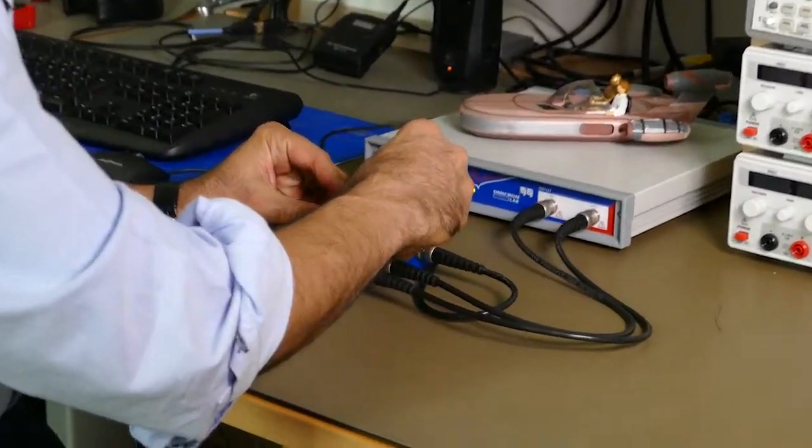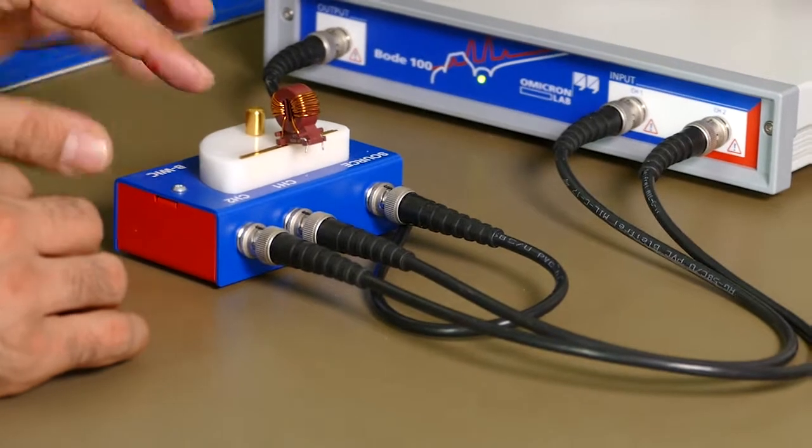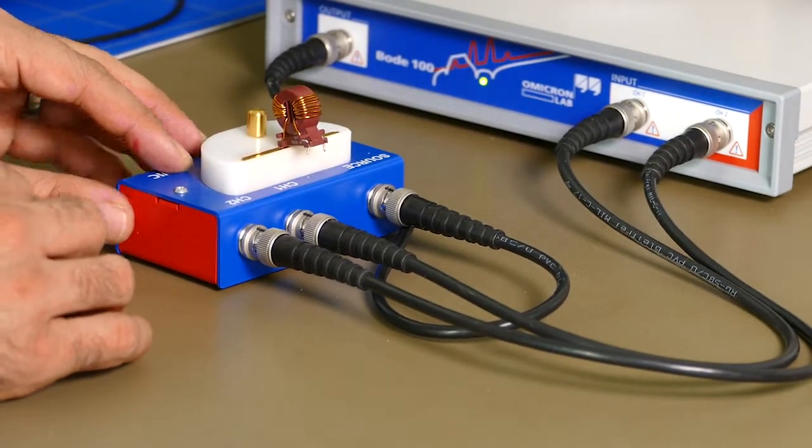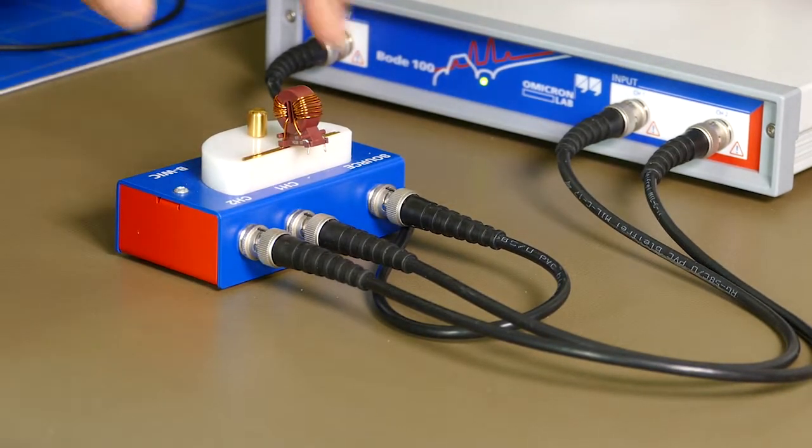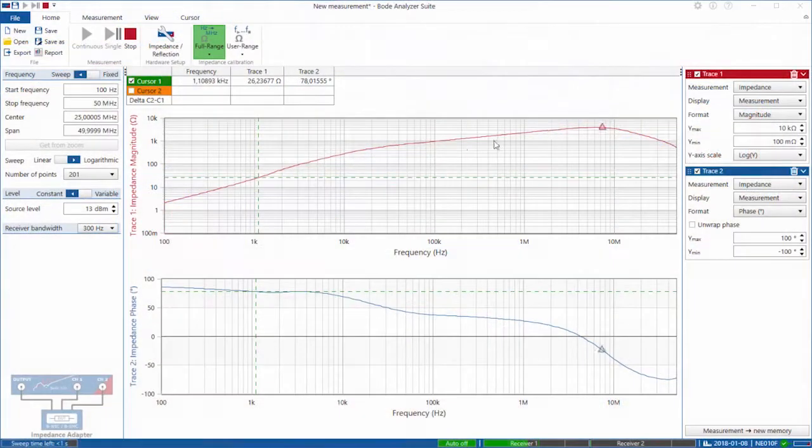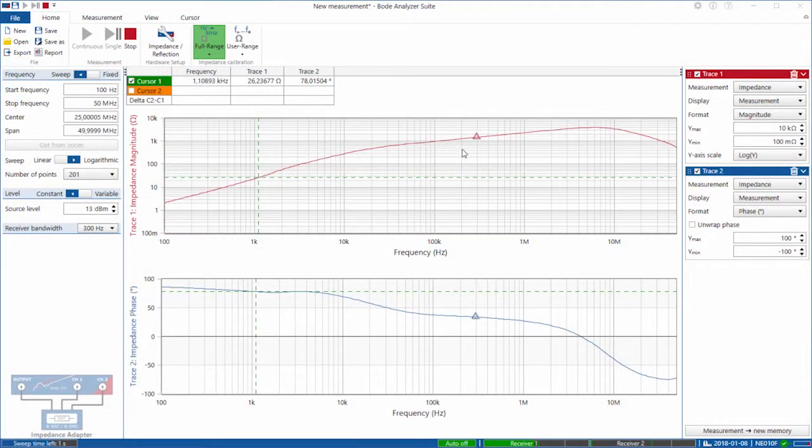Okay, so now the Bode 100 is measuring the common-mode inductance. You can see that this part is open, and here on the impedance plot you can see that the impedance rises and it is at its highest around 5 to 7 megahertz. Of course, that is the area whereby common-mode currents start to flow well.